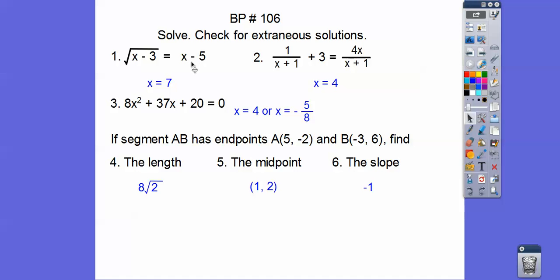So remember when you square this side, it gets x squared minus 10x plus 25. And here you're going to multiply everything by x plus 1. Here you're going to probably factor this if you can. And if you can't, use the quadratic formula. I'm afraid of the quadratic formula with numbers like this.